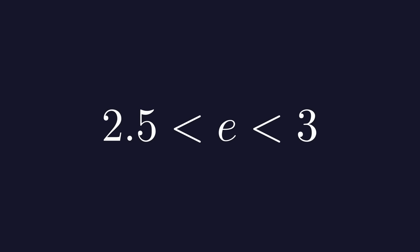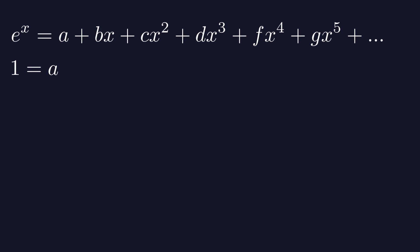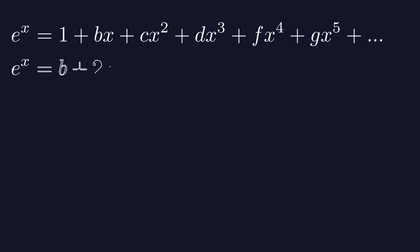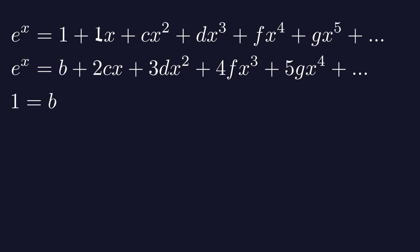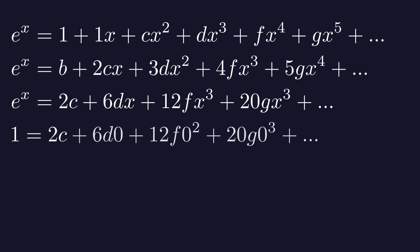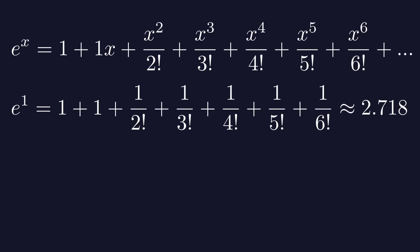There are many ways to calculate the value of e. But first, let's find a Taylor series for the function e to the power of x. We will use the same method as we used to find a Taylor series for sine of x and cosine of x. We start by setting x to 0. This shows that the first coefficient is equal to 1. Next, we take the derivatives of both sides of the equation. The left side, the derivative of e to the power of x, is straightforward because e to the power of x is its own derivative. For the right side, we use the constant, sum, and power rules. Then we set x to 0 again and we find that b is equal to 1. We repeat this process multiple times to calculate more coefficients. This gives us the Taylor series for e to the power of x. To find the value of e itself, we can plug in 1 for x in the Taylor series and sum the terms. After summing the first 7 terms of this series, we find that e is approximately equal to 2.718.